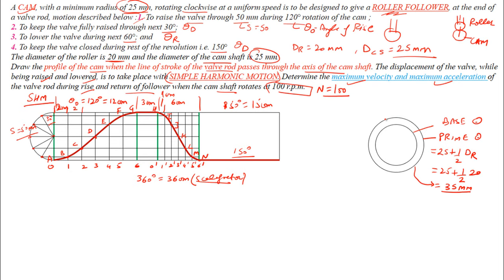Draw the axes through the cam center. Place the roller follower on top, with its axis passing through the camshaft axis. Divide the cam circle into the motion phases as per the displacement diagram: mark the 120° angle of ascent, 30° dwell, 60° angle of descent, and 150° dwell. Then divide the angle of ascent and descent each into 6 equal divisions.